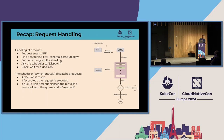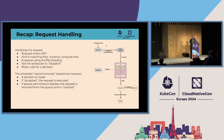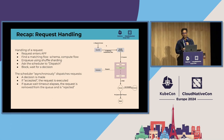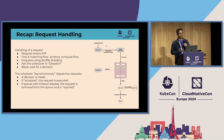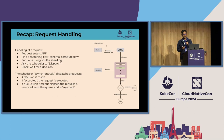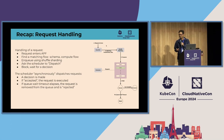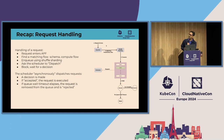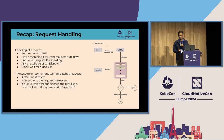Let's do a quick recap on how APF handles a request. A new request arrives; we find a matching flow schema and compute the flow of the request. The request is enqueued using shuffle sharding, and then we ask the scheduler to dispatch. The scheduler dispatches the request that should be executed next using the fair queuing technique, and dispatches as many requests as possible. The request waits in the queue for a decision: if accepted, it gets executed. If the queue wait time threshold is exceeded and the scheduler cannot accommodate the request, it is removed from the queue and rejected.